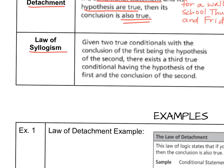The next law we'll use in deductive reasoning is called the law of syllogism. Given two true conditional statements where the conclusion of the first statement is the hypothesis of the second, there then exists a third true conditional that we can write using the hypothesis of the first statement and the conclusion of the second. Let's look at an example to see how we can work through this law.